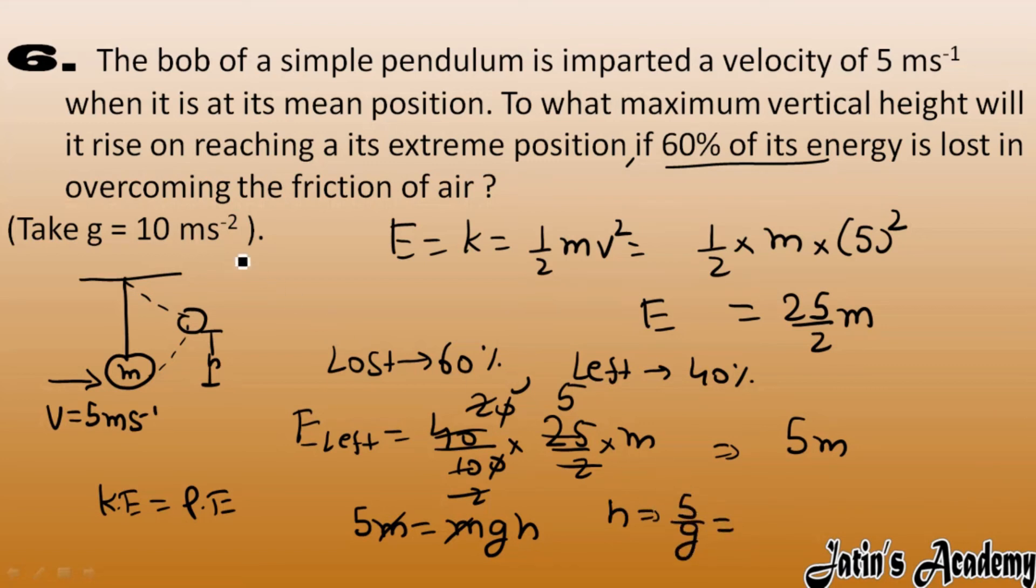G value is given as 10, so that we got it as 0.5 meter. It means that the simple pendulum we have given the velocity of 5 meter per second, it raises to a height of 0.5 meter on its extreme position. It goes and here 60% energy is lost in overcoming the friction, only 40% energy is left.